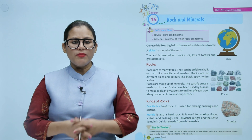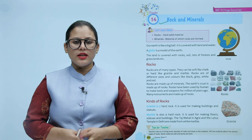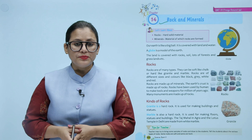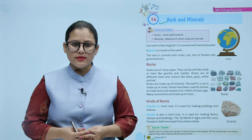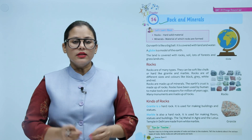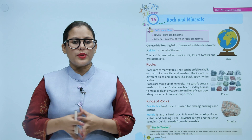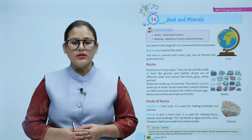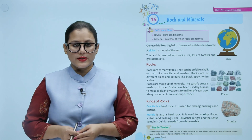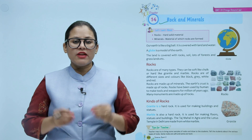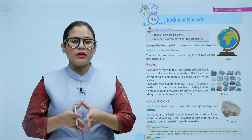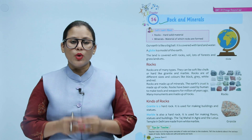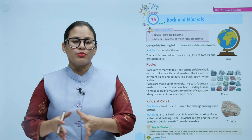Rocks are of many types. They can be soft like chalk or hard like granite and marble. Rocks are of different sizes and colors like black, grey, white and red. Rocks are made up of minerals. The earth's crust is made up of rocks. Rocks have been used by humans to make tools and weapons from millions of years ago. Many monuments are made up of rocks.